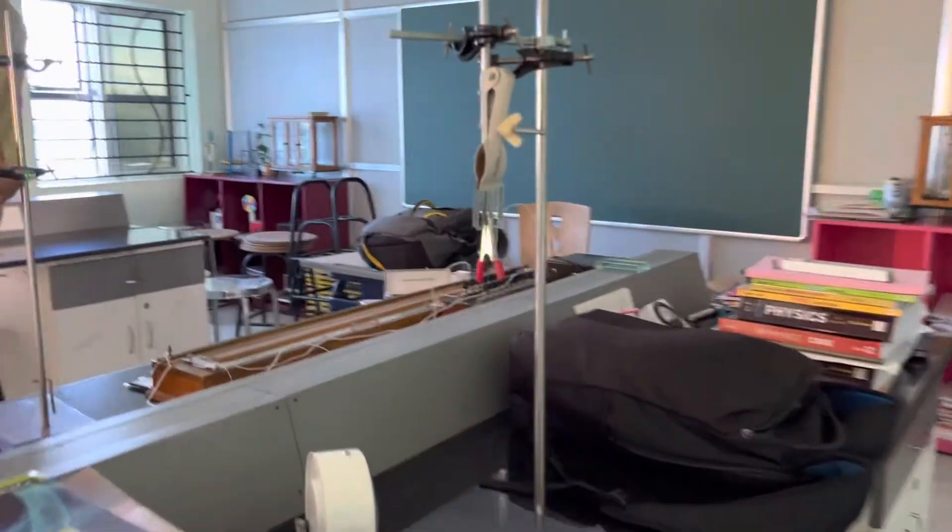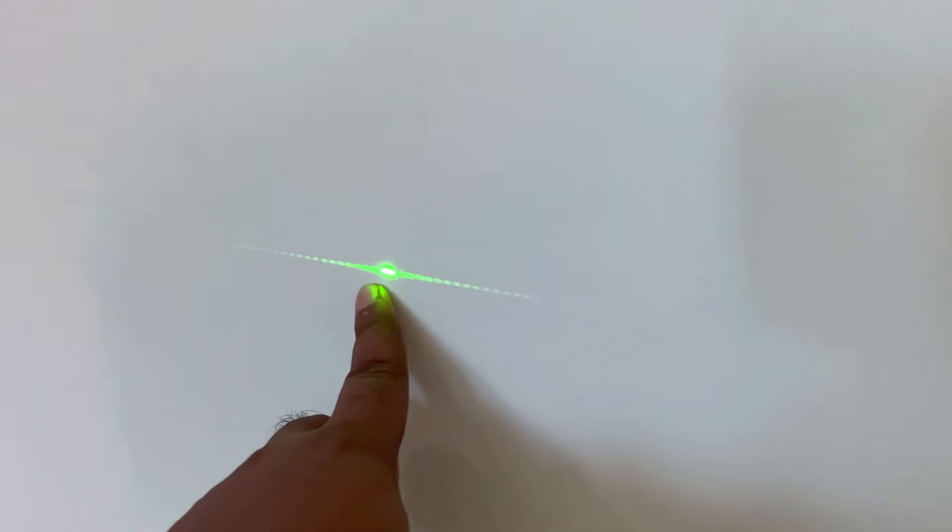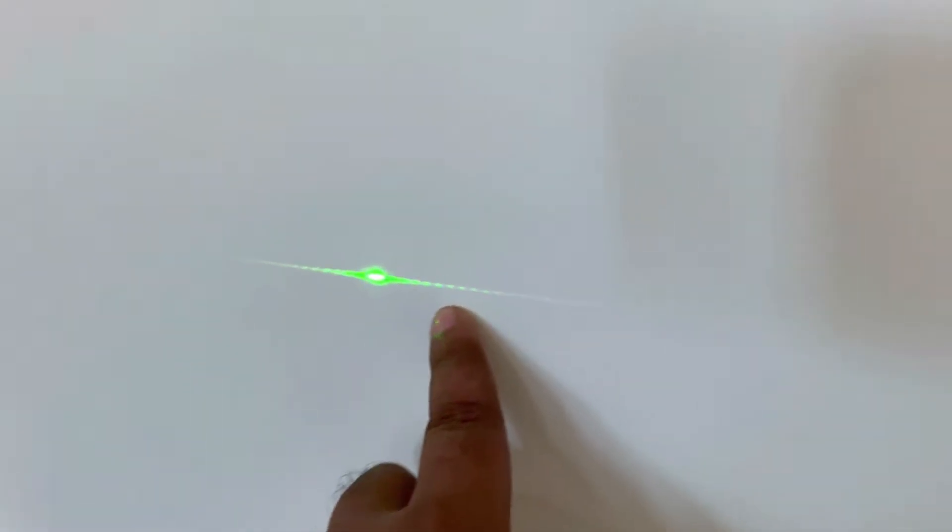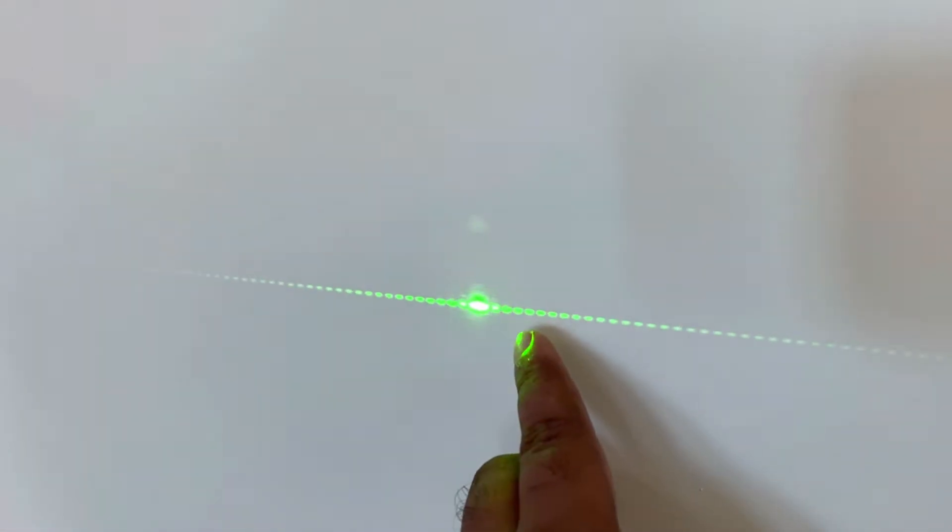Here is our screen, so you can see the diffraction pattern, the maximum, minima, the central maximum. And these are the maximum, minima. If you can see clearly: maximum, minima, maximum, minima we are getting.